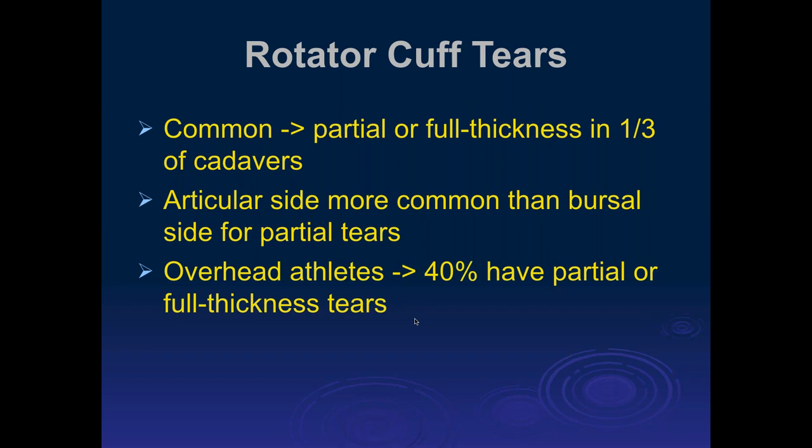I've got partial tears in both of my supraspinatus tendons. Both times I decided not to have surgery. The only thing that keeps me from being symptomatic is doing exercise. If I lay off shoulder exercises for an extended period of time the pain comes back, but if I keep doing them they're asymptomatic. I can't explain that, but a number of shoulder surgeons and athletes I've talked to have had similar experiences. You would think exercise would make it more symptomatic if you have a partial tear or a small full thickness tear.